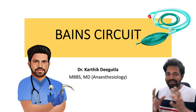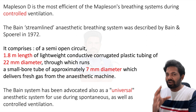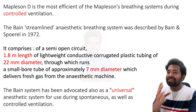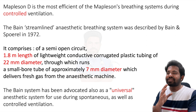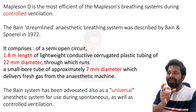Bain circuit is a modification of Mapleson D. Mapleson D is the most efficient of the Mapleson's breathing systems during controlled ventilation. It was after 1972 that the Bain streamlined anesthetic breathing system was described by two people: Bain and Spoerel.